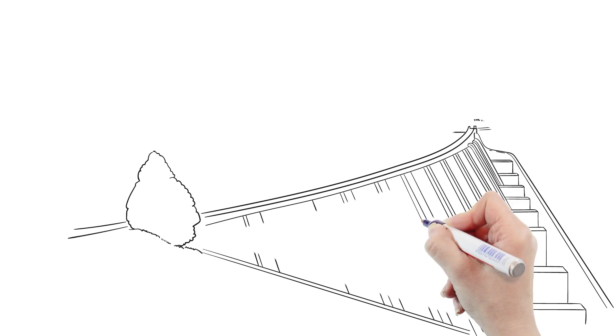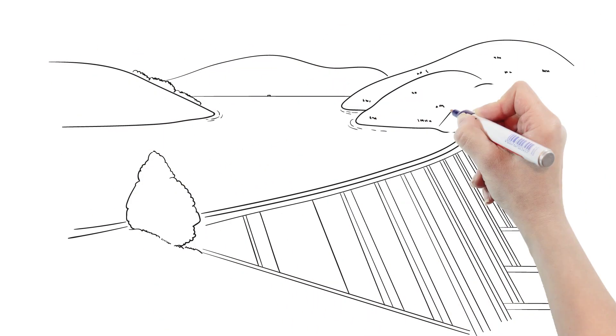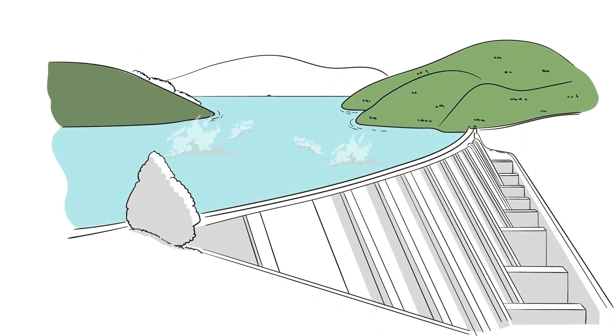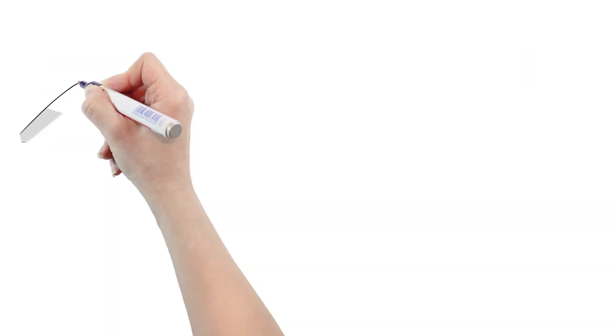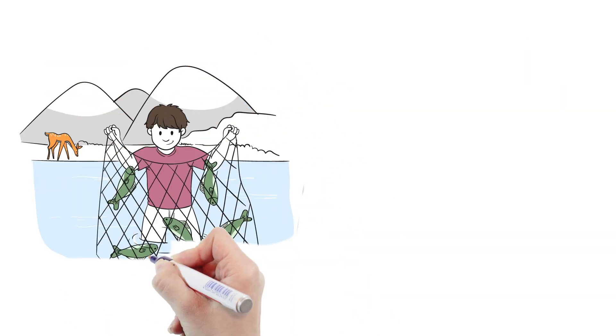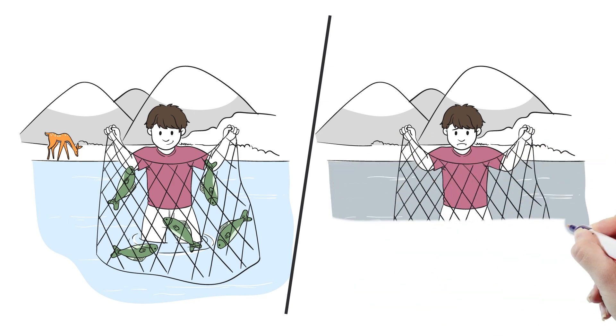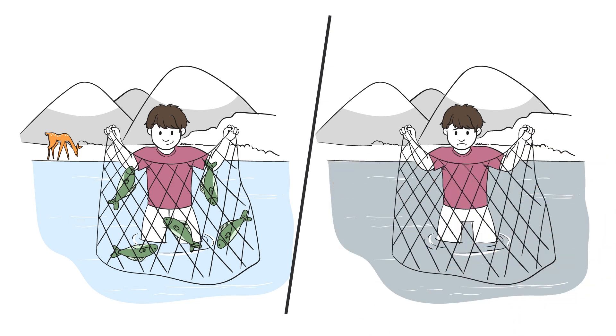Reservoirs behind dams produce 797 kilotons of methane annually. Methane is a greenhouse gas, 80 times more potent than carbon dioxide. The reductions in fish populations and water quality also disrupt traditional cultural practices and food sources of tribal nations and other indigenous populations.